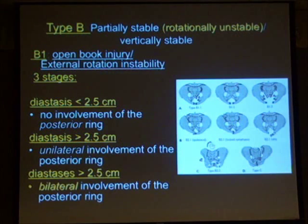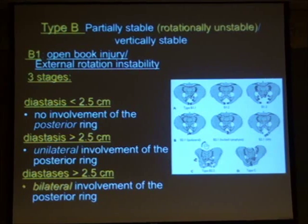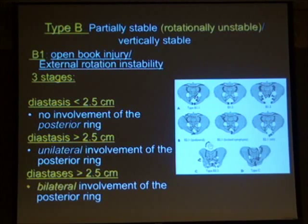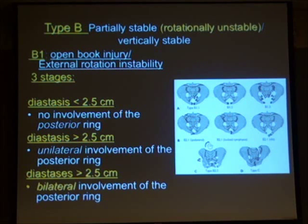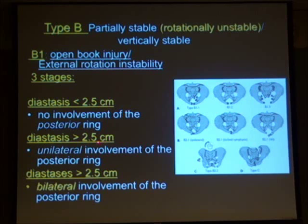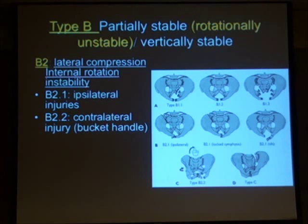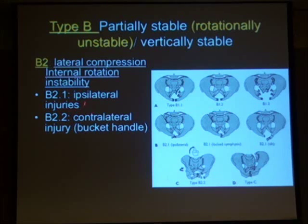Moving on to Type B — these are horizontally unstable but vertically stable. B1s can be divided into 1, 2, and 3: where symphysis diastasis is less than 2.5 cm; greater than 2.5 cm; or bilateral involvement of the pelvic ring. The B2s are the lateral compression-type injuries giving an internal or external rotation deformity to one hemipelvis. B2s ipsilateral are the contralateral injuries with a bucket-handle type.